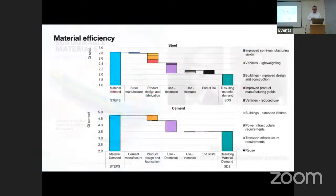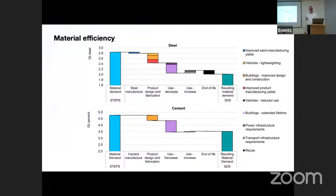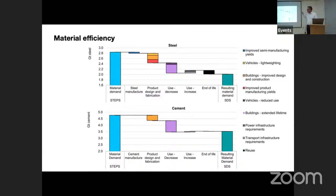We're now seeing this translated into the IEA's scenario planning for the future. The material demand for steel and cement shows these classes of material efficiency activities — better steel manufacture with less waste, better product design using less material, increased use for wind turbines, better end-of-life recycling — yielding significant savings now starting to be modeled in the big energy-use models.